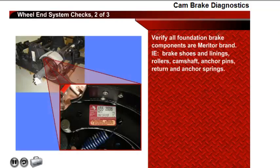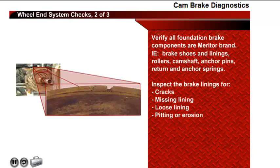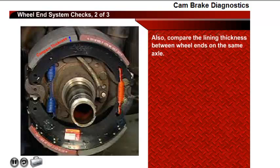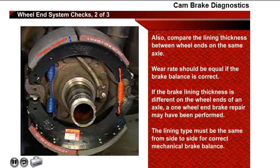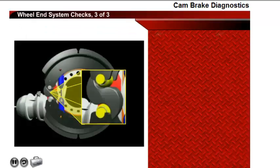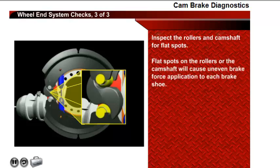Next, verify all foundation brake components are Meritor brand. Inspect the brake lining for oil, grease, or other friction-altering substances. Inspect the brake lining for cracks, missing lining, loose lining, pitting, or erosion on the lining face, scoring caused by road debris, or linings worn less than one-quarter inch in thickness. Also, compare the lining thickness between wheel ends on the same side — the wear rate should be equal if brake balance is correct. If the brake lining thickness is different on the wheel ends of an axle, a one-wheel-end brake repair may have been performed, and the lining type must be the same from side to side for correct mechanical brake balance.